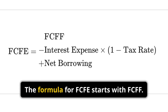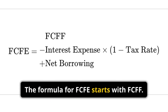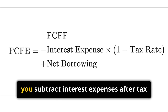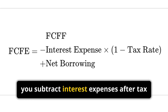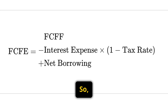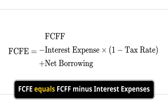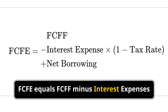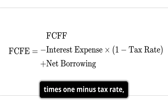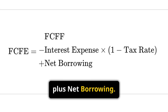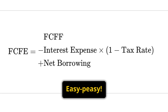The formula for FCFE starts with FCFF. Then, you subtract interest expenses after tax and add net borrowing. So, FCFE equals FCFF minus interest expenses times (1 minus tax rate) plus net borrowing.